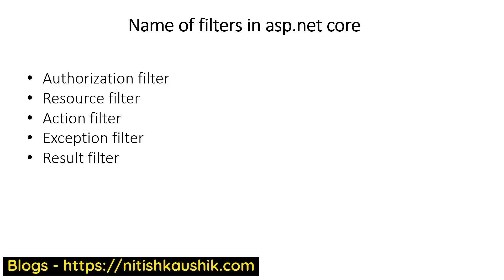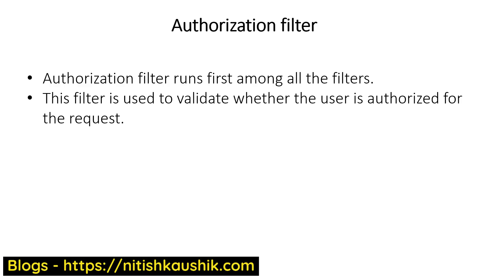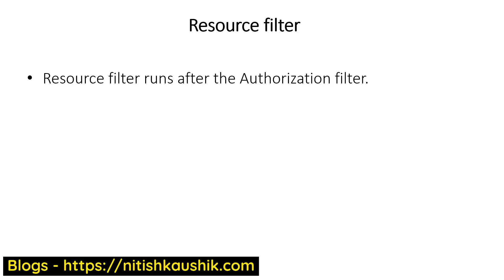Let's talk about the authorization filter. The authorization filter runs first among all the filters. It is used to validate whether a user is valid or has all the permissions required to access a particular resource or action method. If the user is authorized, the request will continue. If there is some problem or the user is not authorized, it will return directly from the authorization filter, which is why it runs first among all the filters.